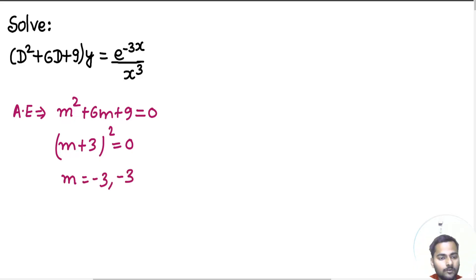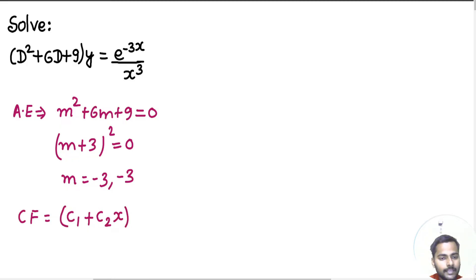Now we will write the complementary function. Because the roots are repeating, the complementary function will look something like this: with the second constant you multiply x, and collectively multiply this with e to the power minus 3x.